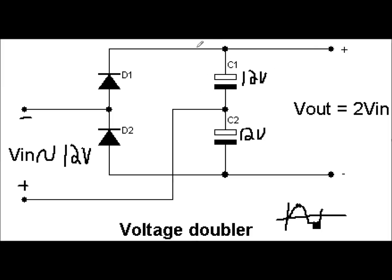And that is because current cannot flow back in this direction through this diode, because it would be reverse biased, meaning that this capacitor is stuck, being at 12 volts.